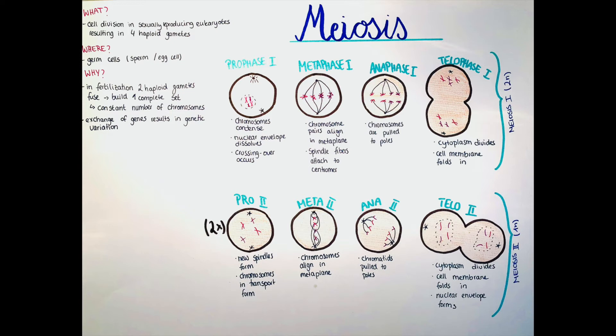In anaphase one, the chromosomes are now pulled to the poles on different sides of the cell. As you can see here, the complete chromosome is pulled apart from its homologous partner. So now the chromosomes will be haploid, but the cell is not divided yet.